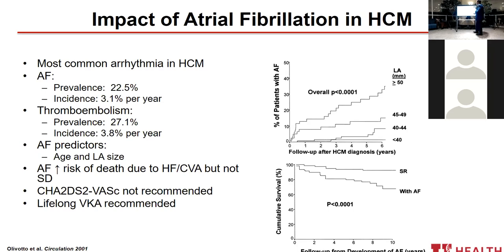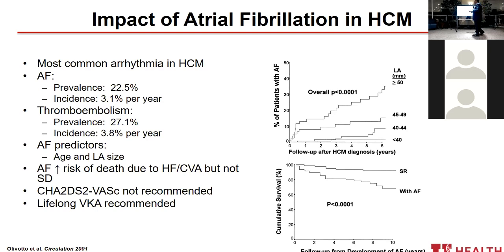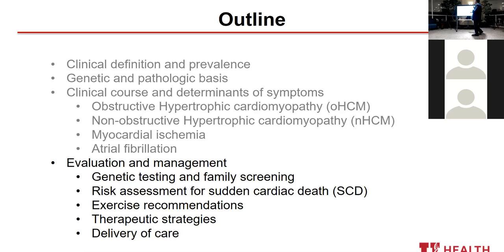Regarding atrial fibrillation in HCM: the prevalence is about 20%. Thromboembolism occurs at an incidence of 3.8% per year. Predictors of AF in this population include age and left atrial size. AF increases the risk of death related to heart failure and stroke, but not sudden cardiac death. The CHA₂DS₂-VASc score is not recommended in this population because the risk of thromboembolism is so high — a patient with HCM and AF automatically warrants anticoagulation. Warfarin is the preferred agent; if not tolerated, NOACs or DOACs can be used.